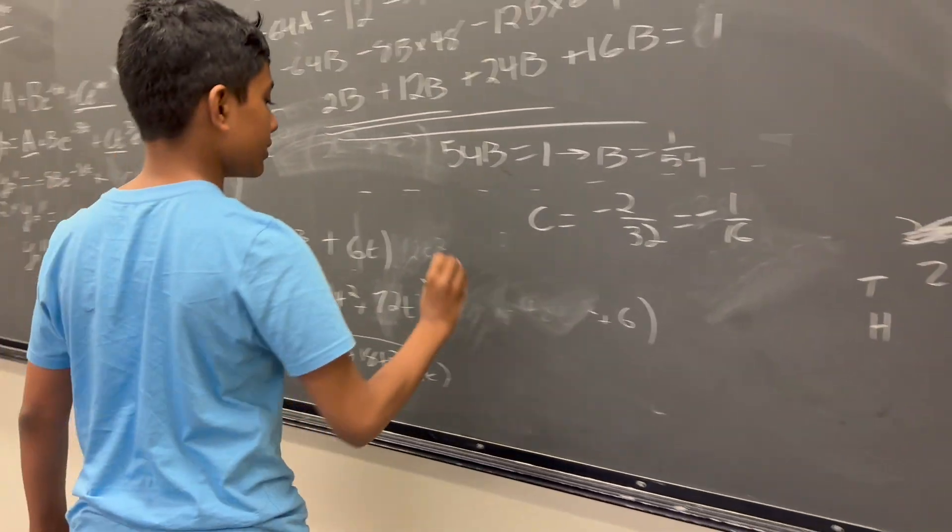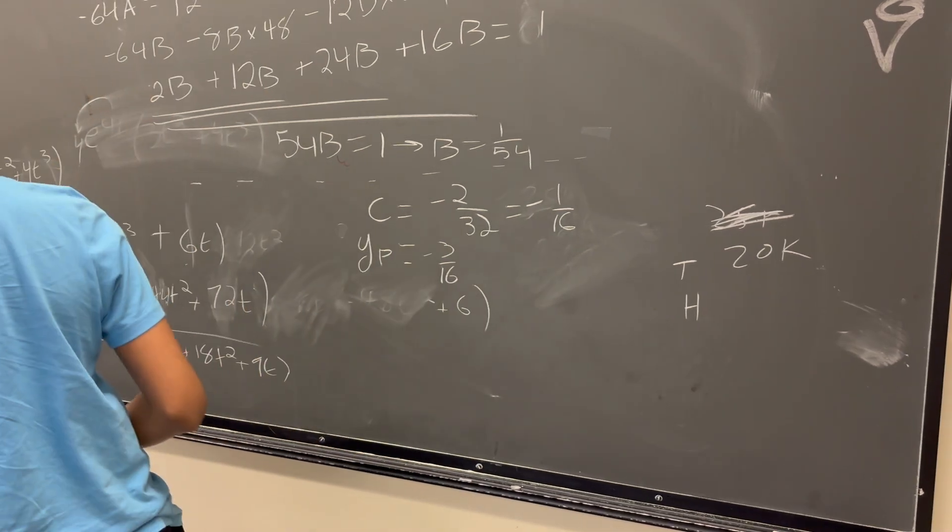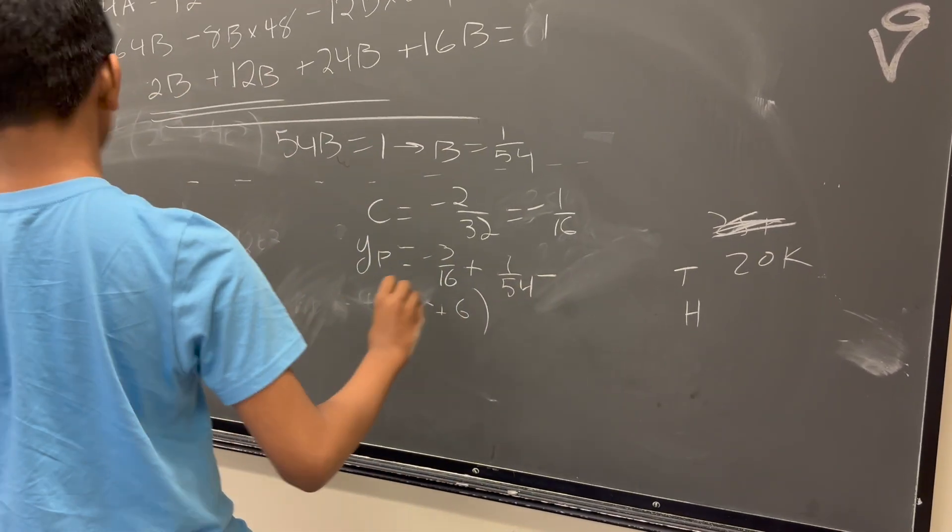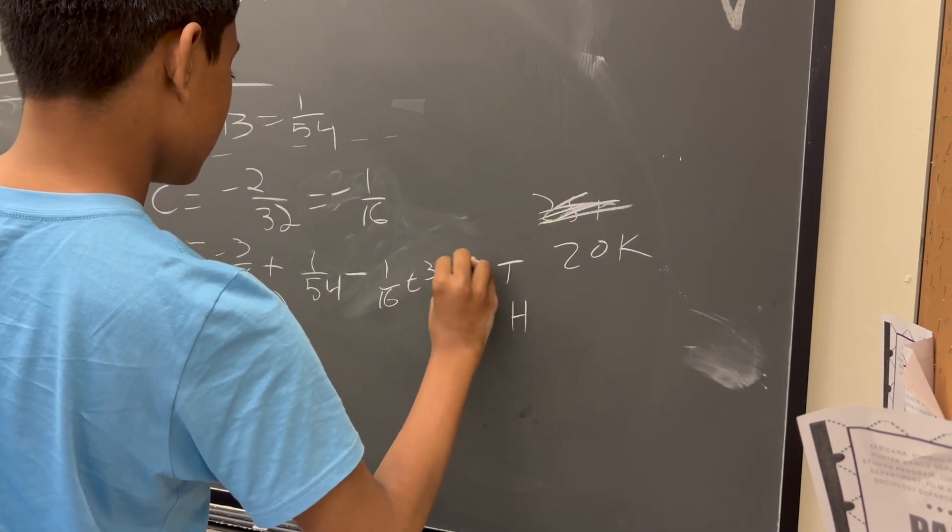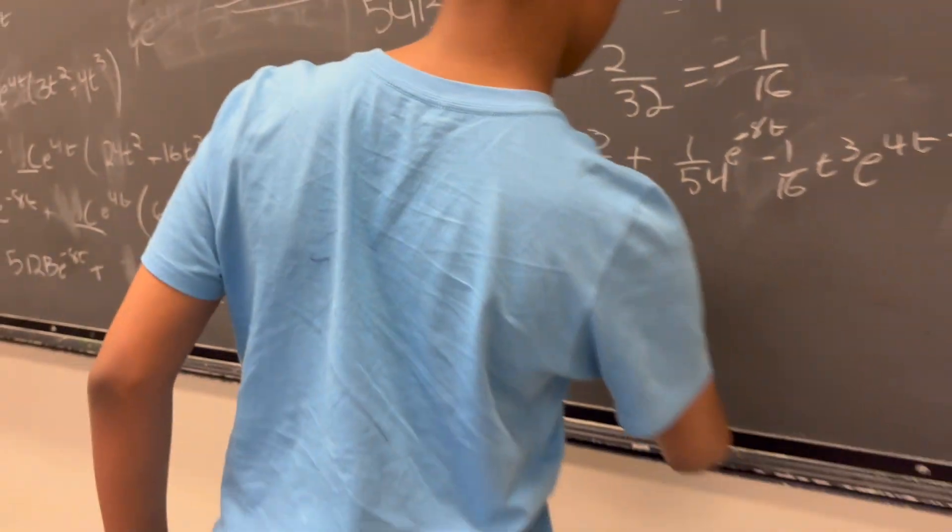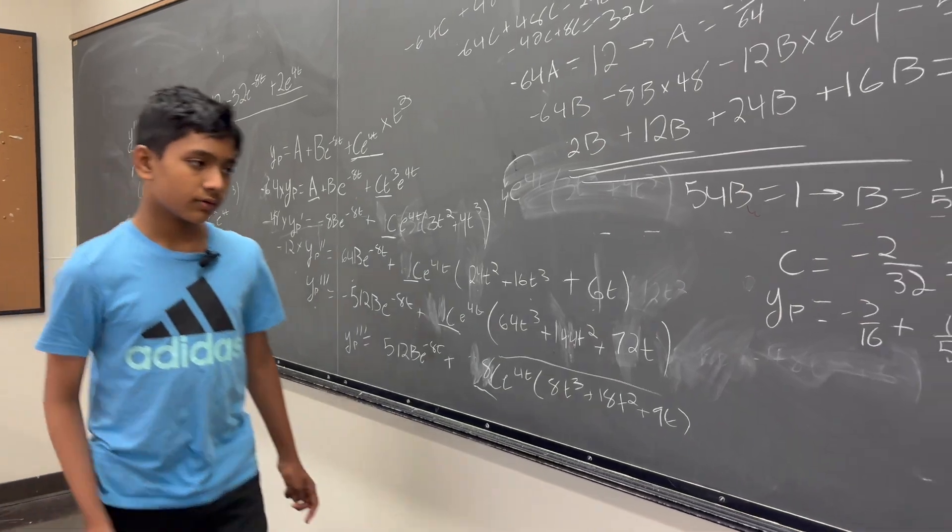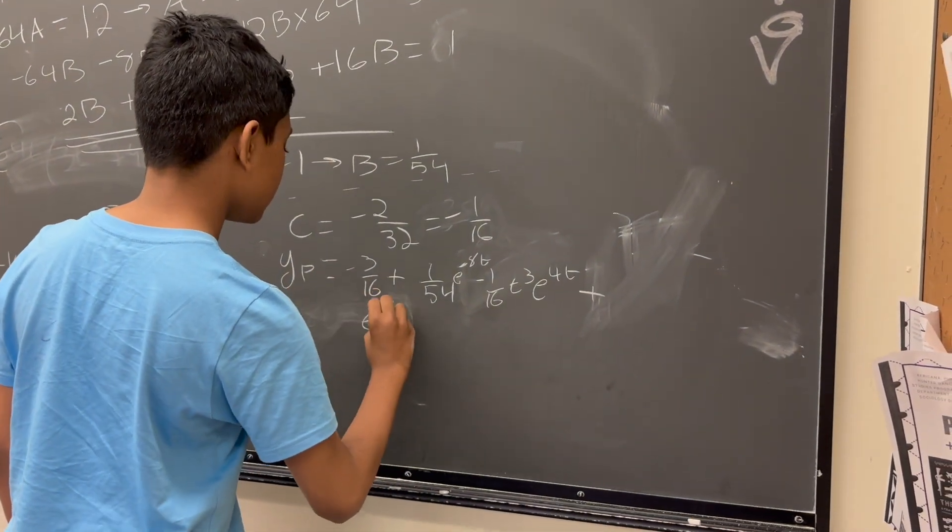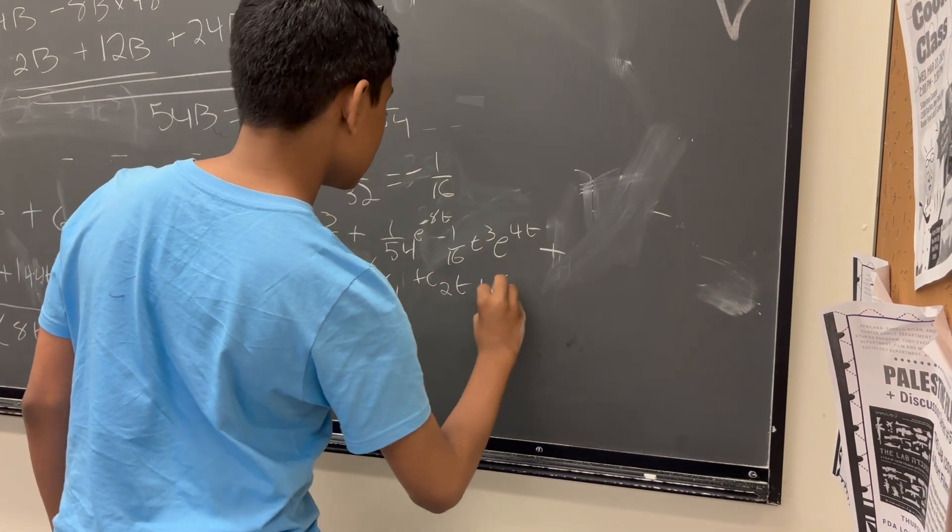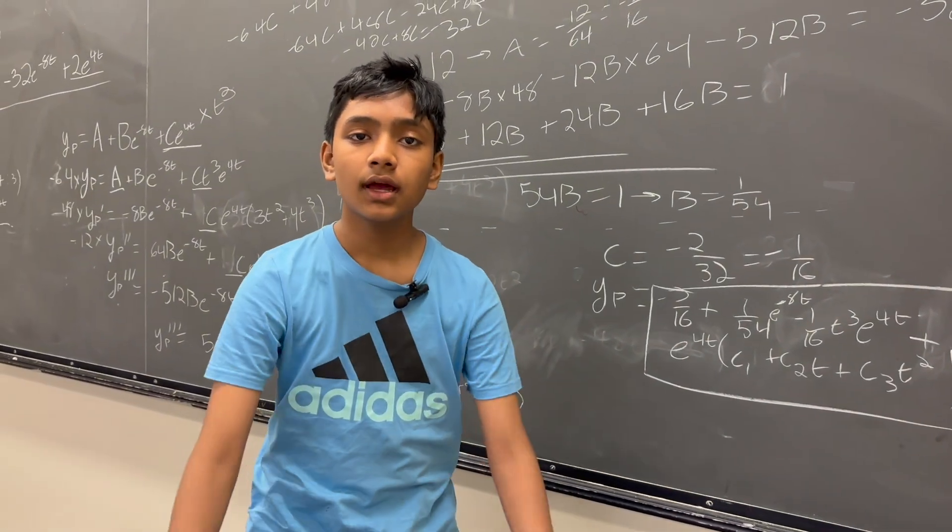So then, at the end of the day, we get that our Y particular is going to be equal to A, which is minus 3 over 16, plus B, which is 1 over 54, plus C, t cubed, e to the 4t. And right, this should be e to the minus 8t. And there we go. So now, all we have to do is add on the homogeneous solution. So, it's all the way back here. So, for the homogeneous solution, I'm just going to factor out e to the 4t. We get C1 plus C2t plus C3t squared. So yeah. It's an insane expression. But that's it. Thank you, everybody, for watching. And we'll see you in the next one.